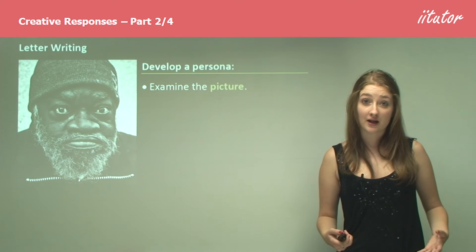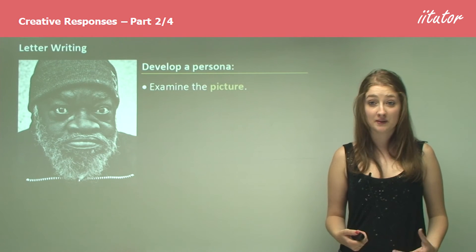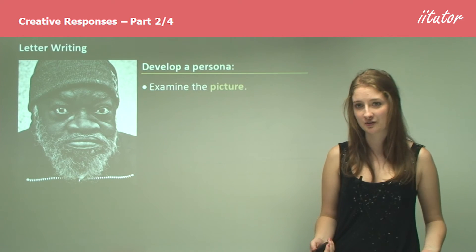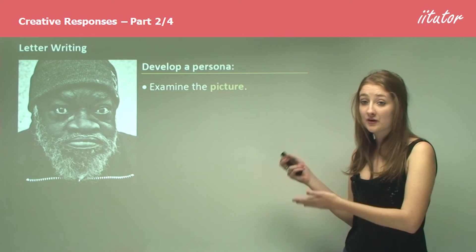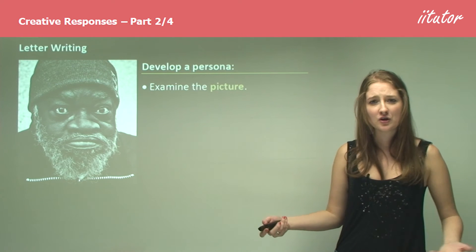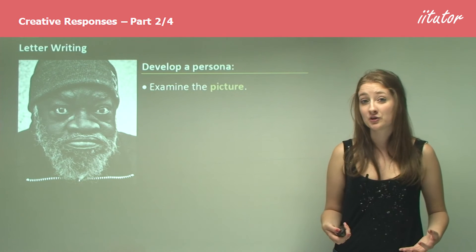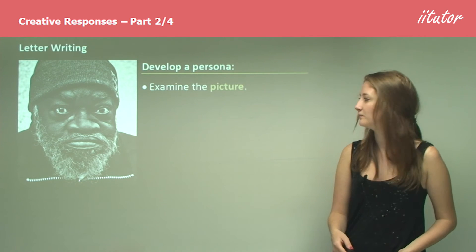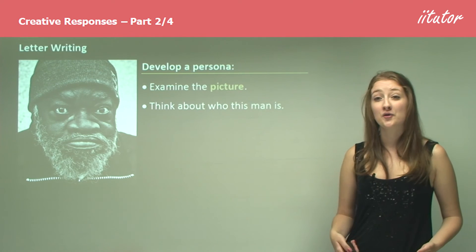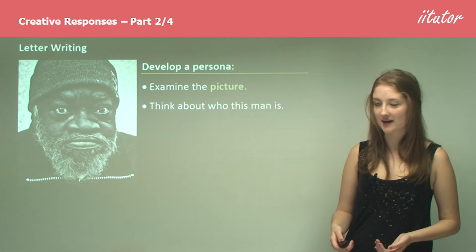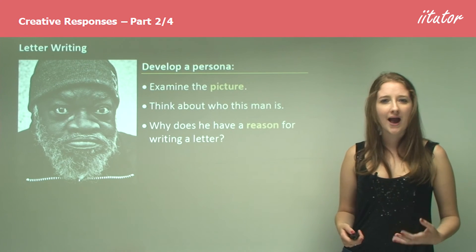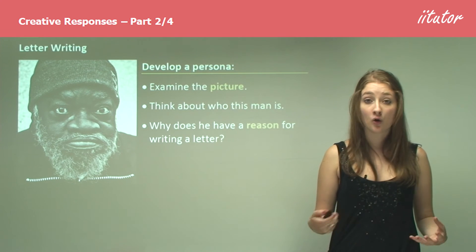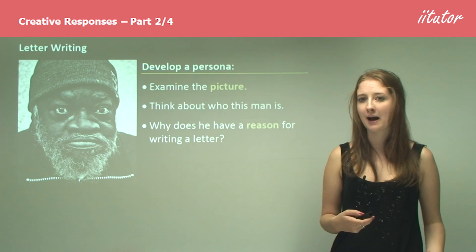For example, while you're developing this persona, you might be asked to look at a stimulus and then provide a letter which that person can be realistically imagined to write. So if you got this man in the exam, first you examine the picture and you're really asking yourself who this person is in order to develop a piece of writing based on him. You're thinking about who this man is at a deeper level than just what he looks like, asking yourself why this man has a reason for writing a letter. You can do a brainstorm on your head or on the page and really have a think about potential reasons.